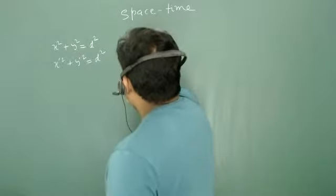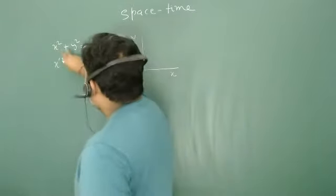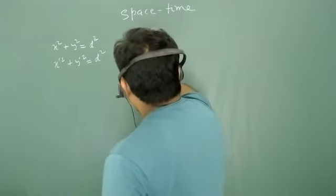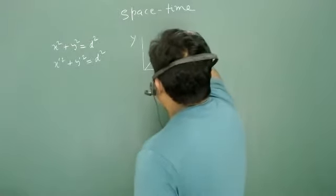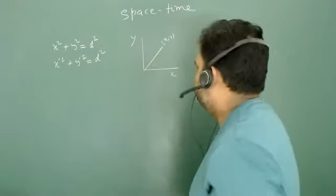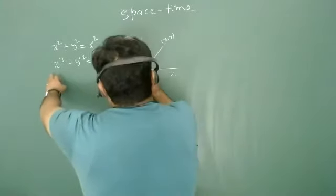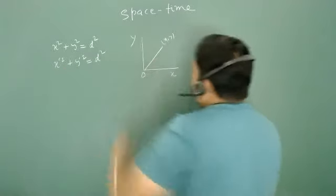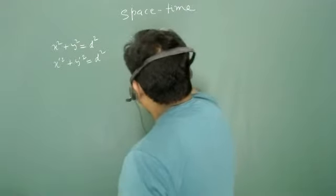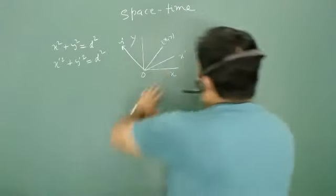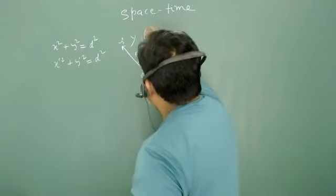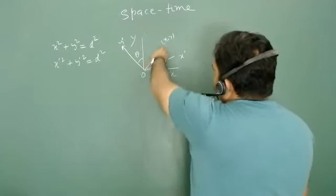For example, this is my x-axis and this is y. If x² + y² = d², then the point (x, y) is fixed and this distance is d. Now if x-dash and y-dash are just making angle theta with the x and y axes respectively, this distance is also the same. So this is one sort of rotation.